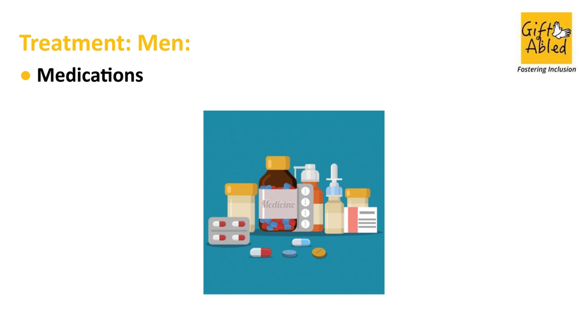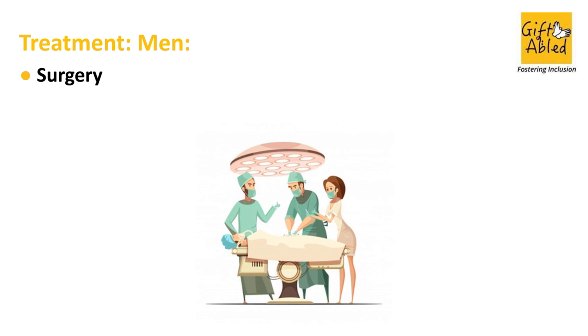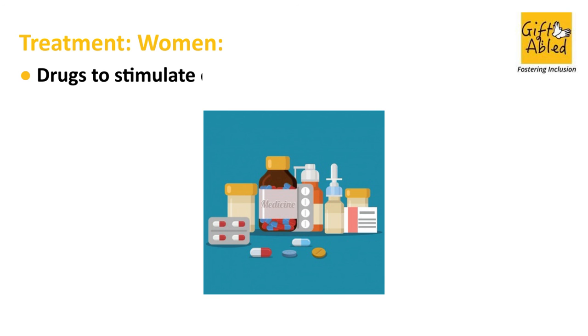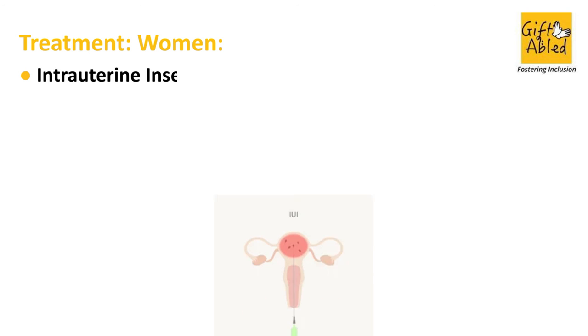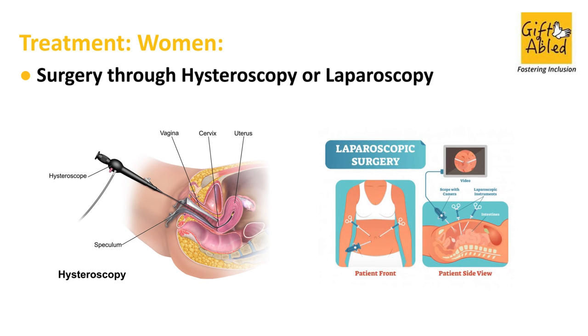Treatment in men: medications, sperm retrieval, lifestyle changes, and surgery. Treatment in women: drugs to stimulate ovulation, intrauterine insemination, and surgery through hysteroscopy or laparoscopy.